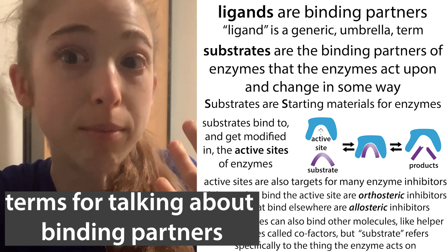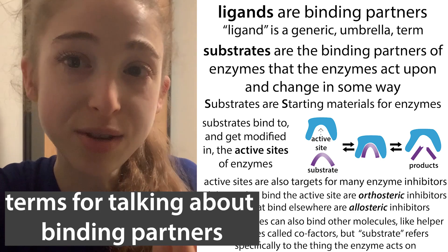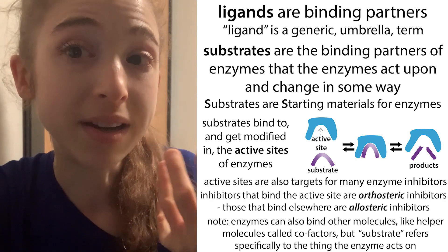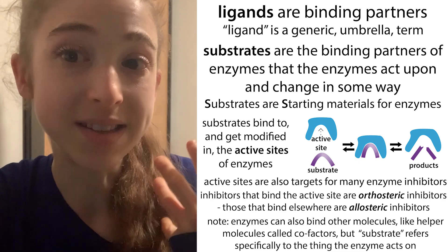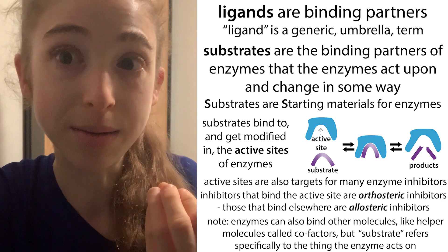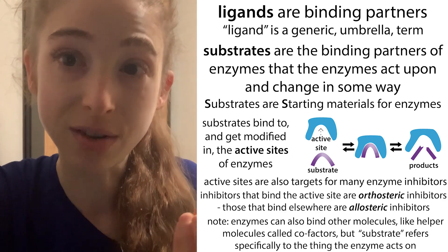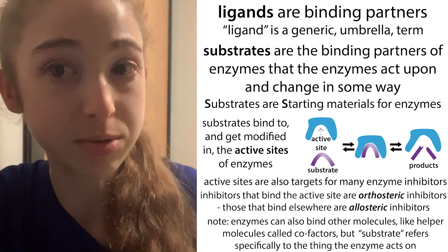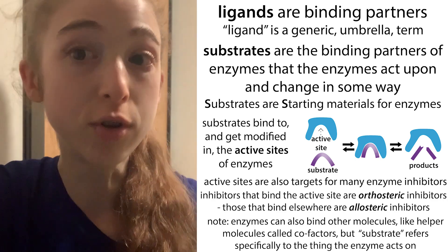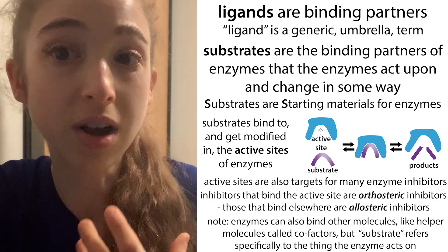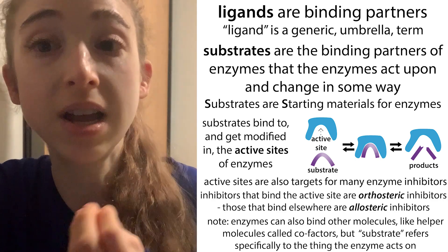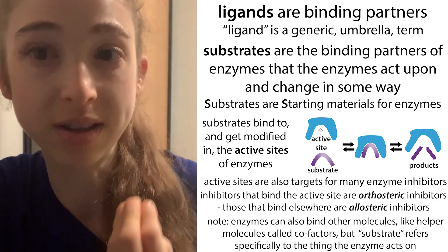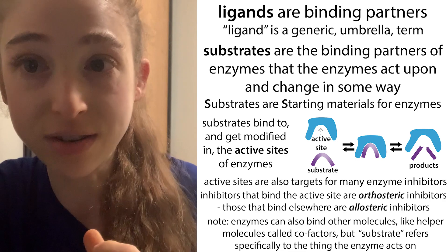Ligand is a generic umbrella term we use to describe a binding partner. If this binding partner is for an enzyme, and that enzyme actually uses it as starting material and acts upon it to change it in some way, we call it a substrate. So ligand is a more generic term, and substrate is when we're talking about the starting material that's binding to an enzyme — one of these reaction helpers or mediators.